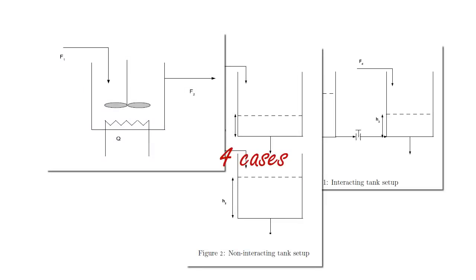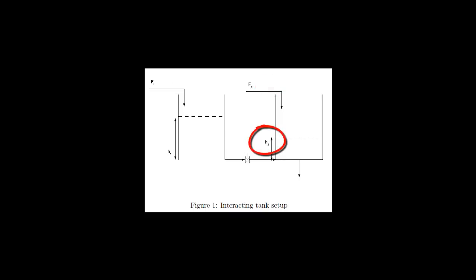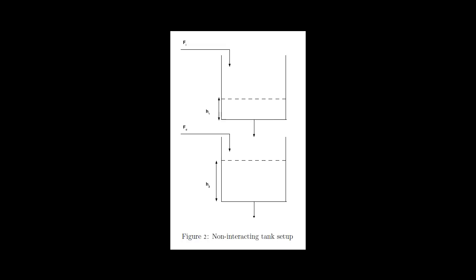You will be asked to handle any one of four cases depending on your group number. The first is the interacting tank problem, with the manipulated variable as the flow of water into the first tank, the disturbance variable as the flow of water into the second tank, and the control variable as the temperature of the water. The second is the non-interacting problem, with the manipulated variable as flow, the disturbance variable as the flow of water into the second tank, and the control variable as the temperature of water at the second tank.